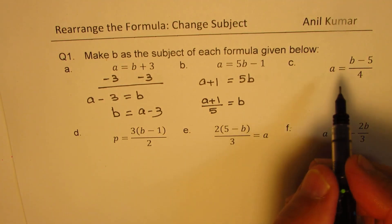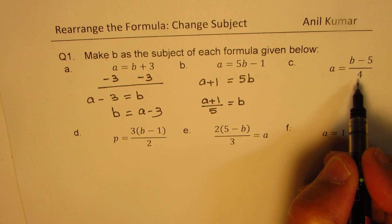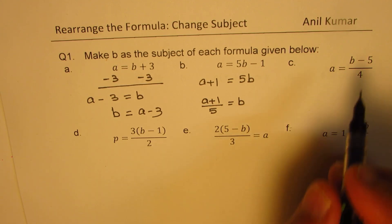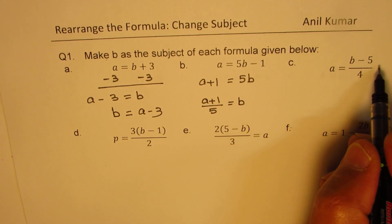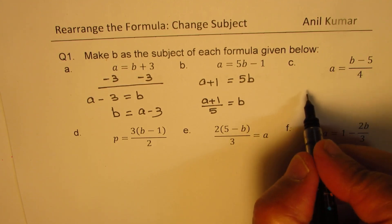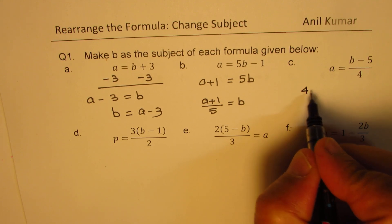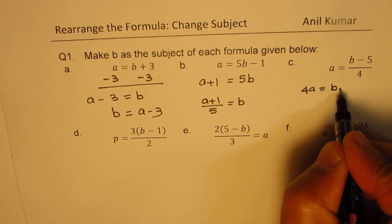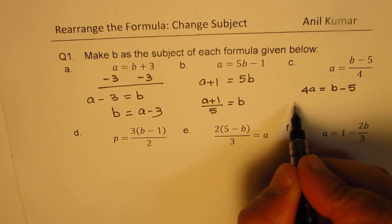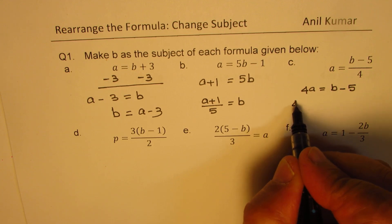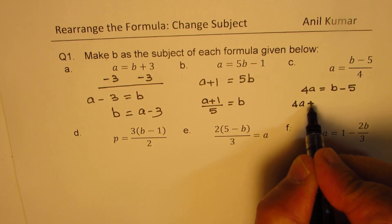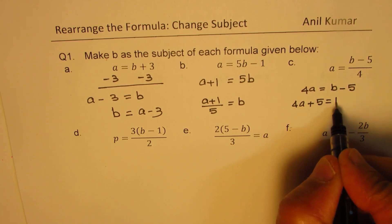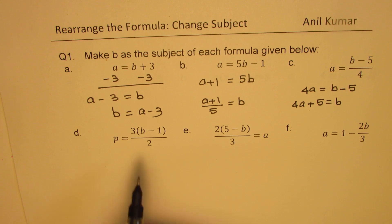For the next example, we'll use the technique of cross multiplication — you can multiply both sides by 4. You get 4A equals to B minus 5. Then using reverse operation, 4A plus 5 equals to B. It's that simple.